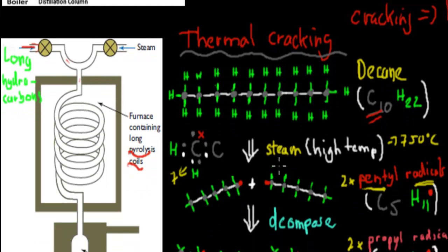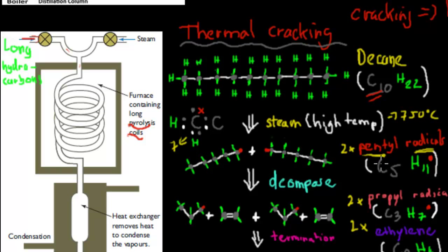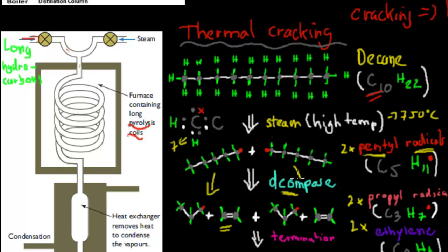So what happens is as soon as the breaking happens, these pentyl radicals will actually decompose. What I mean by decompose is it goes from a five-carbon chain into a three-carbon chain called the propyl radical, and also an ethylene. So this part here — that's your ethylene. Remember, that's what we want to get. So right now we've managed to produce ethylene. This happens twice because we had two five-carbon chains, which each decompose and break up into a three-carbon chain and ethylene.